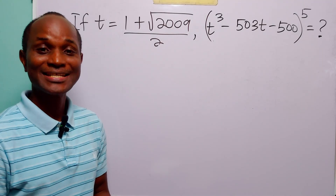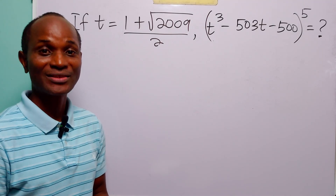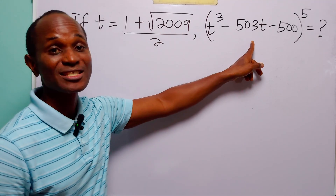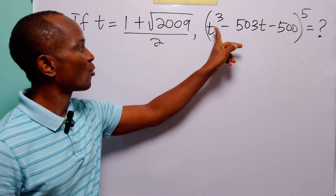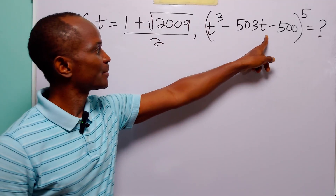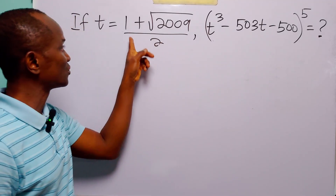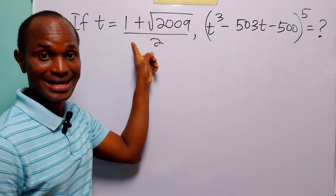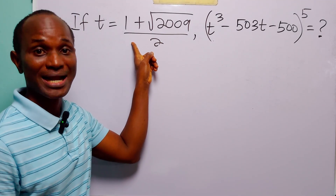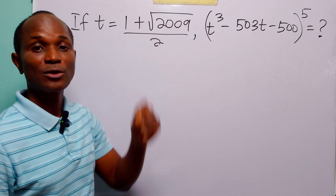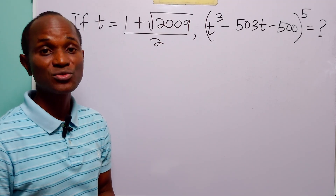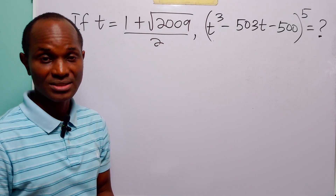Hello and welcome. In this math tutorial, our task is to find the value of this expression when t is equal to (1 + √2009) / 2. And we are going to solve this problem using two different methods.